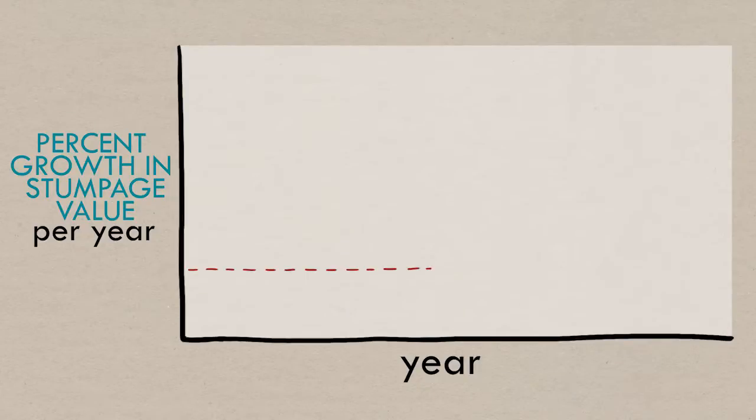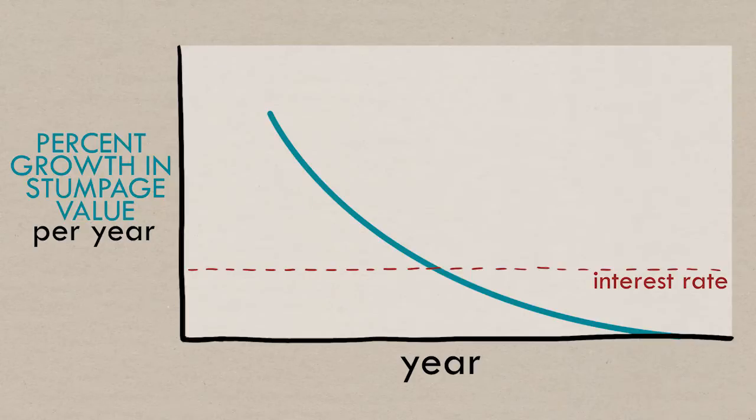Remember on this graph, this is the interest rate and this is the percent by which the value of the forest will grow this year, given as the incremental growth in stumpage divided by the total stumpage. Where they meet is where the value of the forest is increasing by the same rate as whatever we're comparing it to, in this case the interest rate.